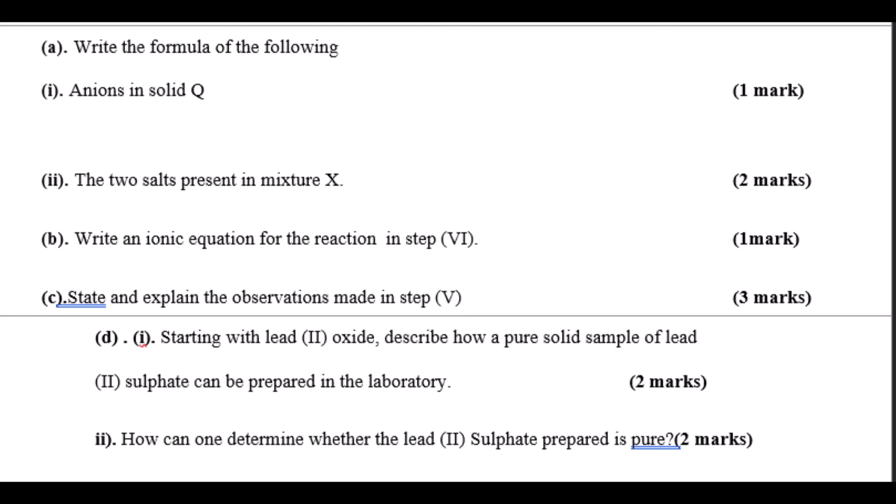From the flowchart: write the formula of the anion present in solid Q. Name the two salts present in mixture X. Write an ionic equation for the reaction taking place in step 6. Starting with lead 2 oxide, describe how a pure sample of lead 2 sulfate can be prepared, then how can you determine whether the lead 2 sulfate prepared is pure.